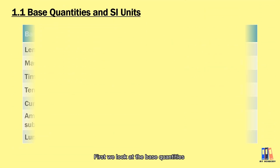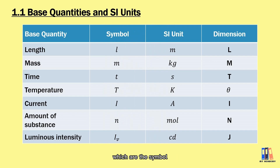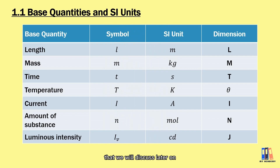First, we look at the base quantities. There are three things we can use to describe base quantities: the symbol used to write the formula, the unit used to describe the size of those quantities, and the dimension that we will use to perform dimensional analysis, which will be discussed later on.